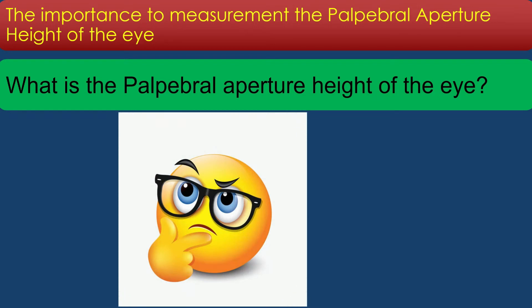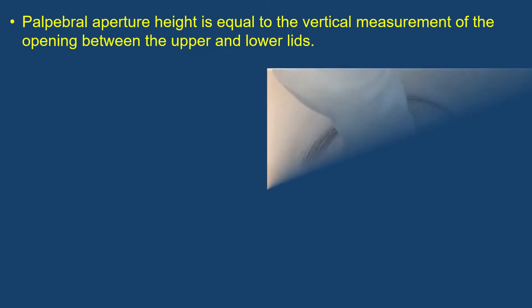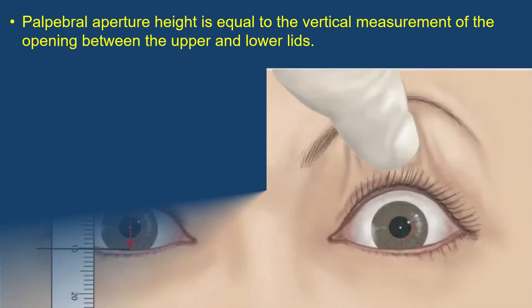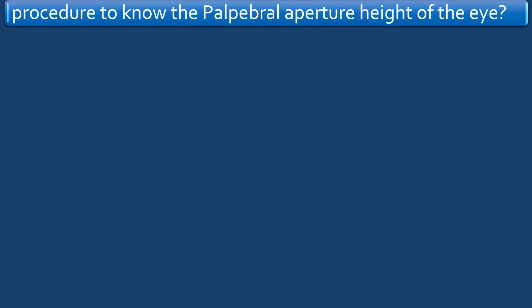Palpebral aperture height is equal to the vertical measurement of the opening between the upper and lower lids. Now, let's come to the procedure to know the palpebral aperture height of the eye.